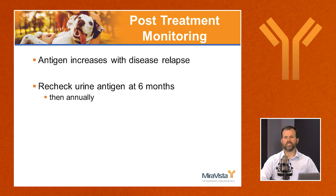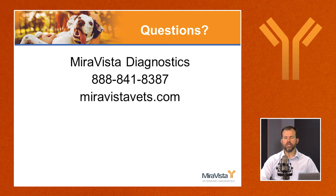It's important not to forget checking itraconazole blood levels, as absorption varies considerably between individual animals. Levels should be checked three weeks after starting the drug or changing the dose, with blood drawn at trough — ideally within four to six hours of the next dose. After treatment completion, antigen concentrations can increase with disease relapse, so checking antigen at six months and then annually is recommended. Antigen levels often begin to climb slowly before clinical signs return, and urine antigen can confirm suspicion of relapse.